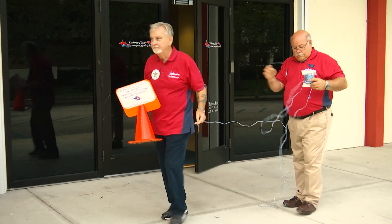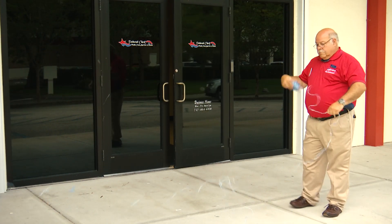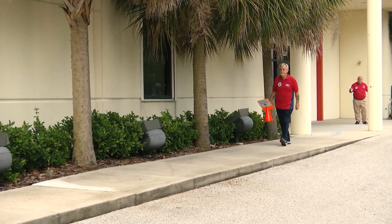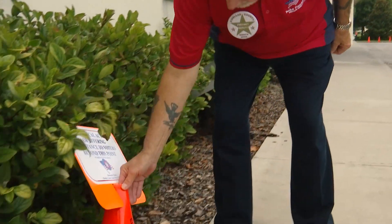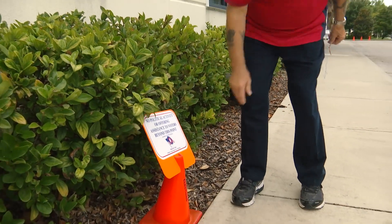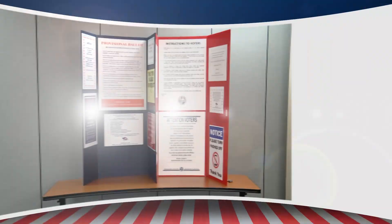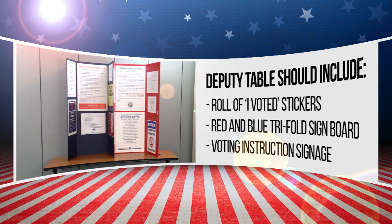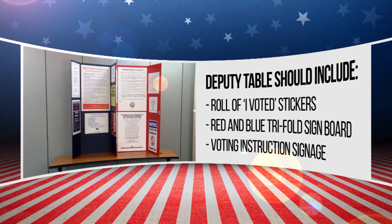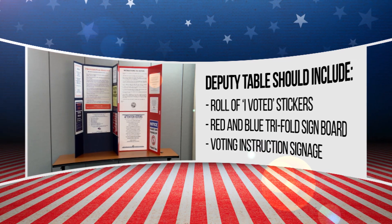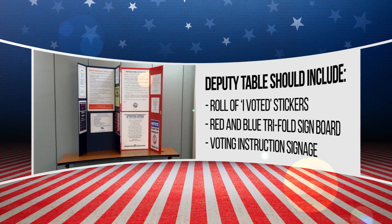The deputy is also responsible for setting up the 100-foot no solicitation and political activity area. Remember, once in place, there is no solicitation or political activity permitted within the 100-foot zone. The deputy table should also be set up to include a roll of 'I Voted' stickers, the red and blue tri-fold sign board, and any other voting instruction signage necessary.